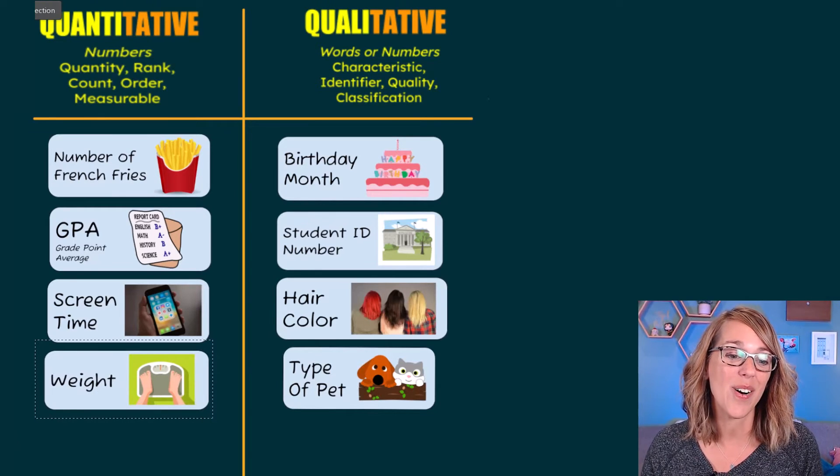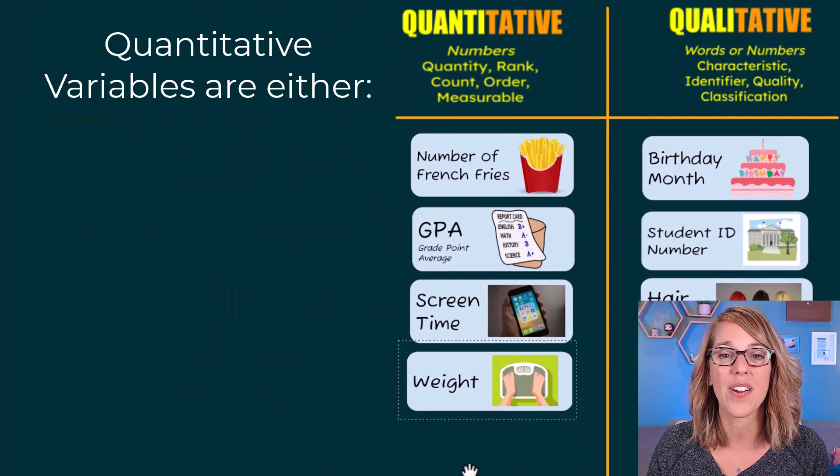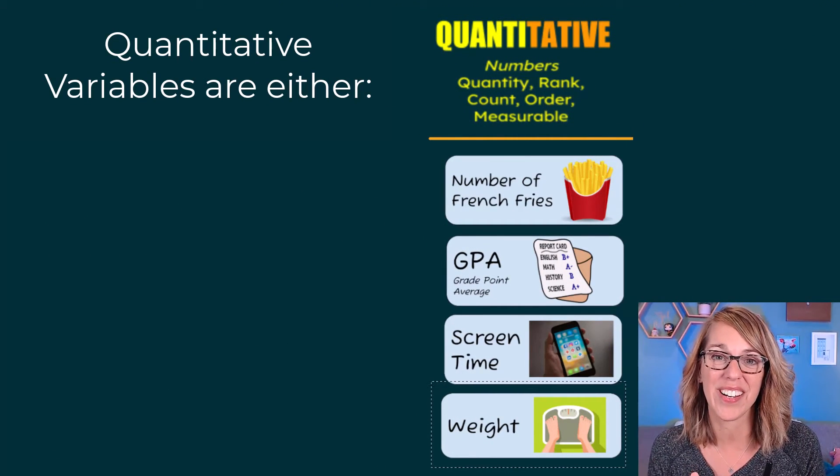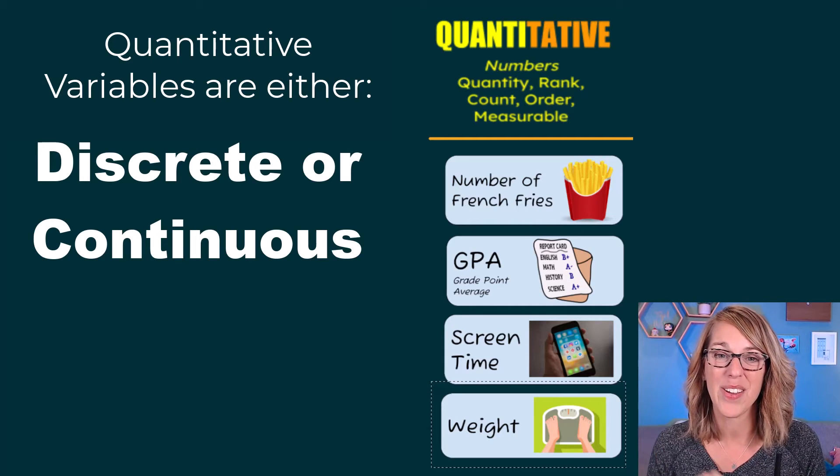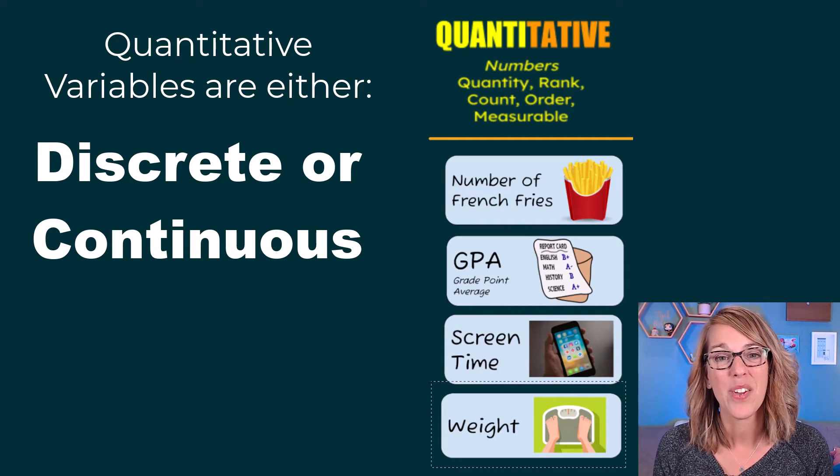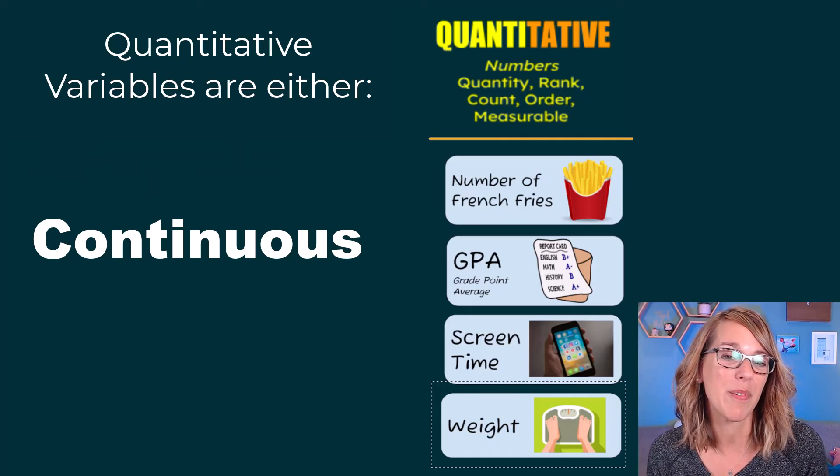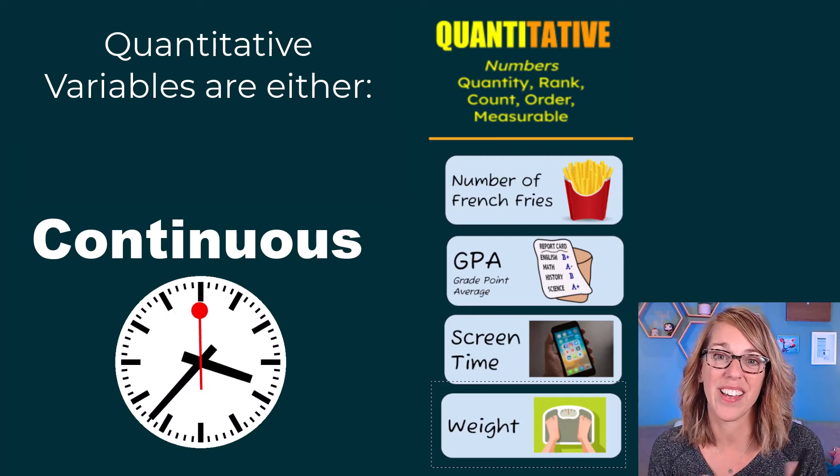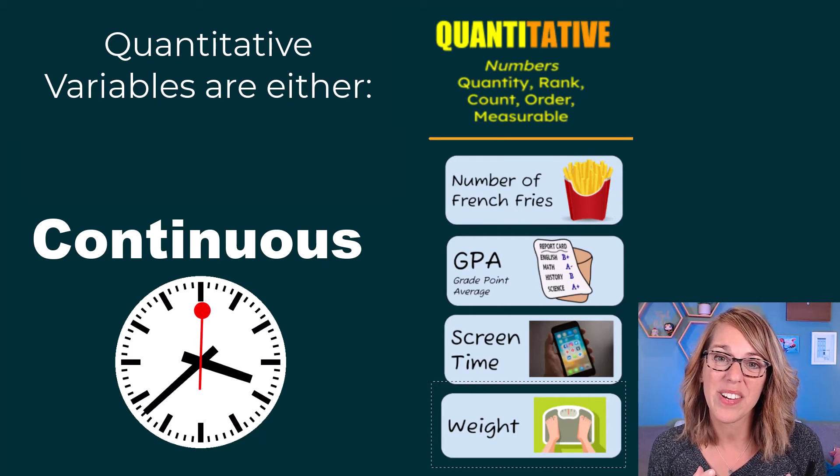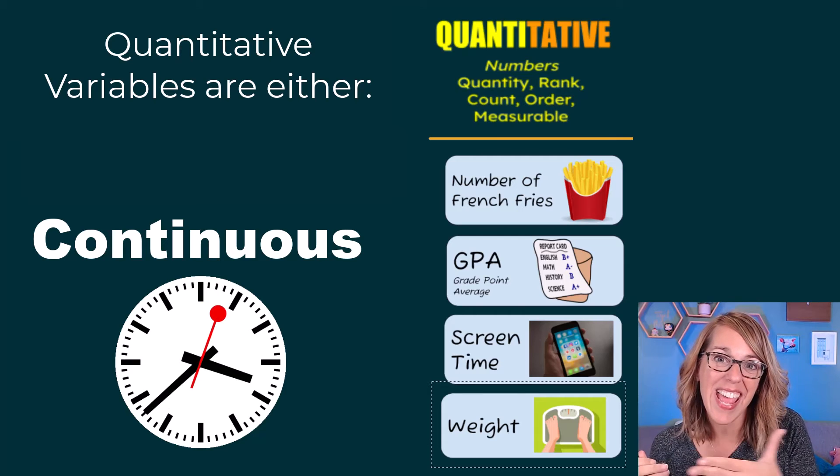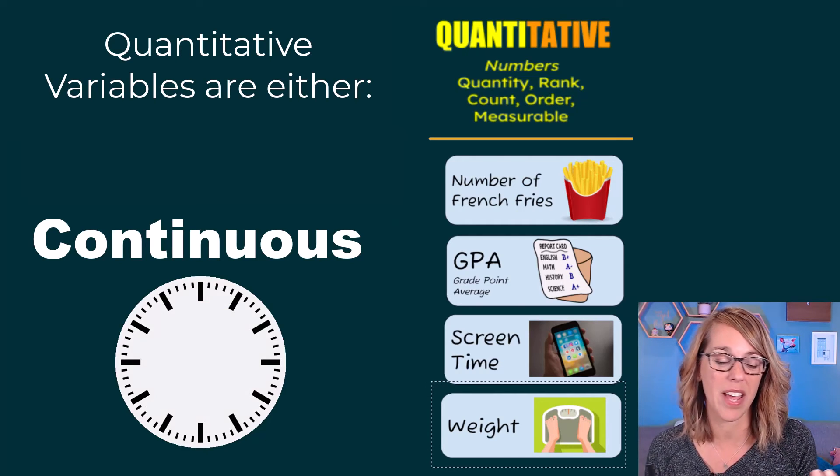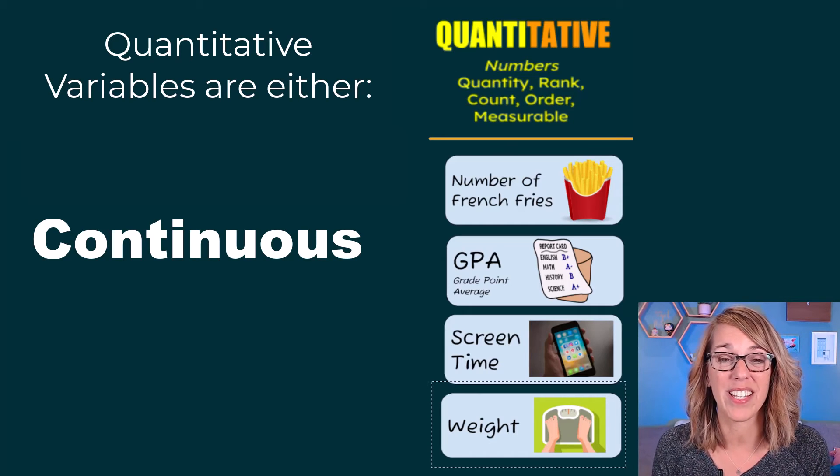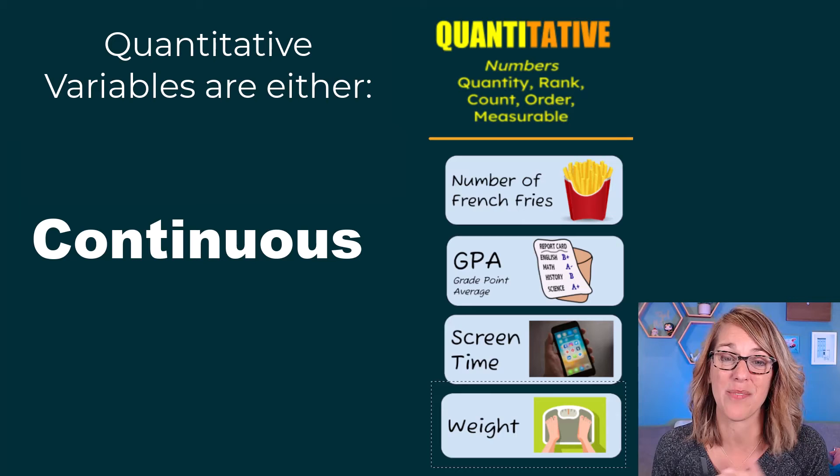Now we can also take a look at the quantitative variables only and classify them even further into either discrete or continuous variables. When you're thinking about a continuous variable, think of a sweeping secondhand as you're looking at time on a clock. Continuous quantitative variables can take on any value along that number line. Time is a great example.